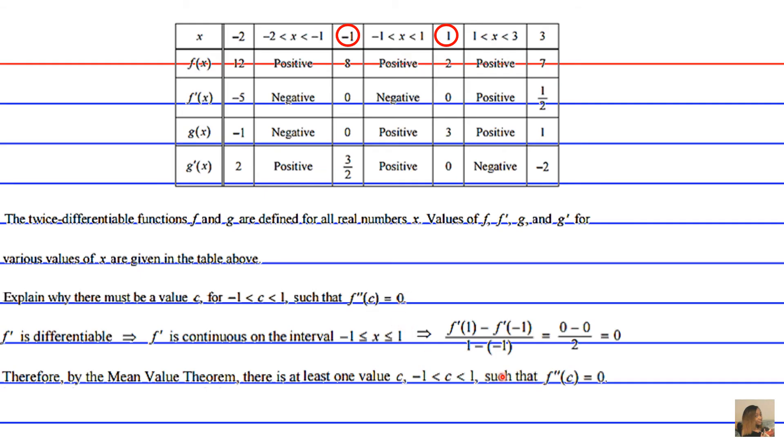The Mean Value Theorem basically justifies our answer. There could be more than one point c where we're going to get at least one point of 0 for the slope or the second derivative. This is because the average value of the slope is 0 for our included endpoints on our closed interval.